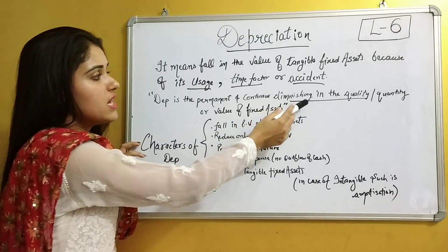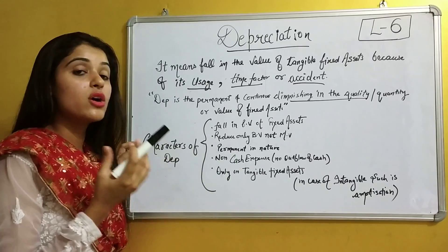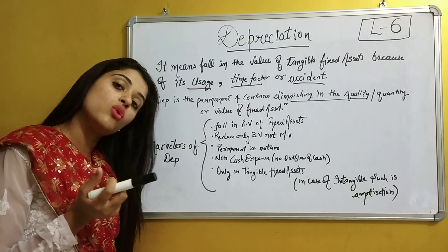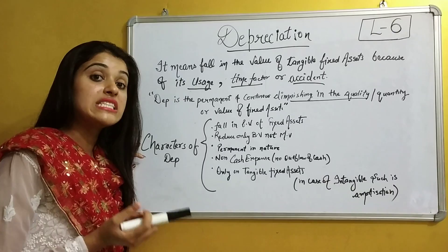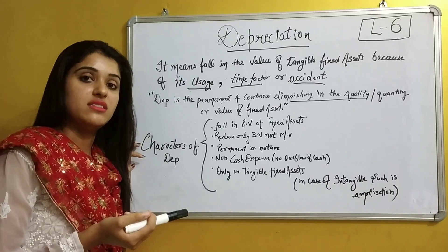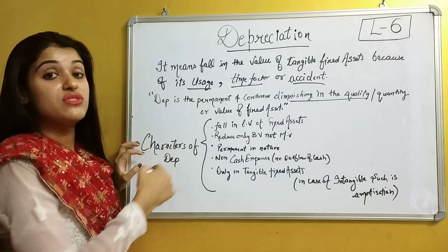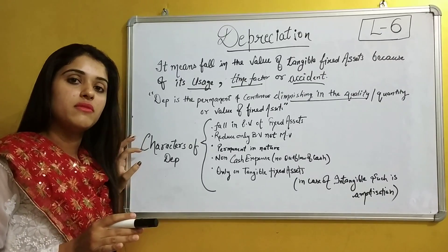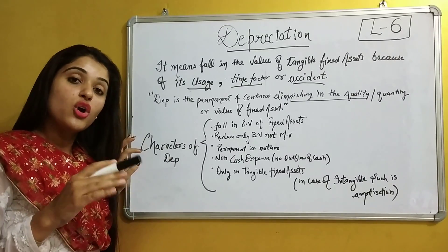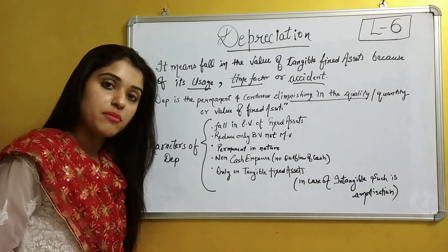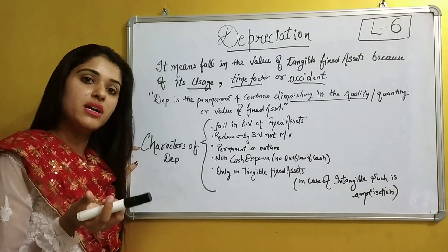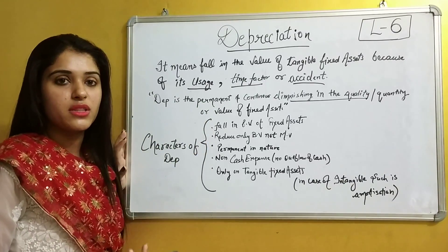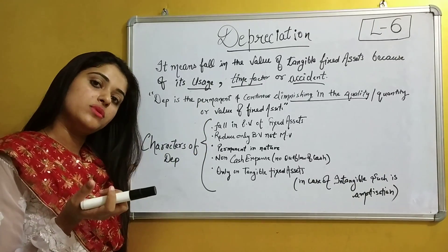Next is the diminishing in quality. Not only the quantity of the asset is going to decrease, the quality of the asset is also going to decrease. Why does quality decrease? Due to usage — when we are using it, the quality becomes reduced. When we use an asset continuously in our business or by some accident, the quality of that asset becomes reduced.